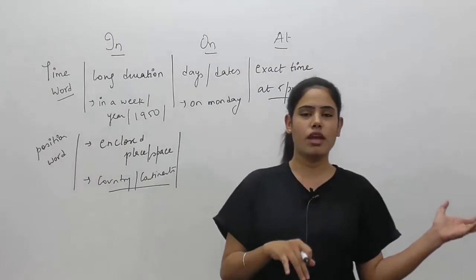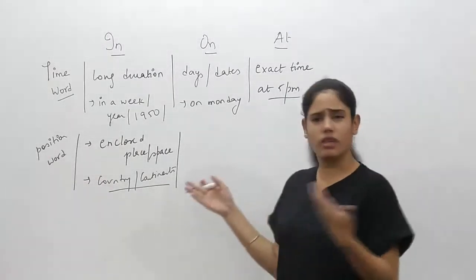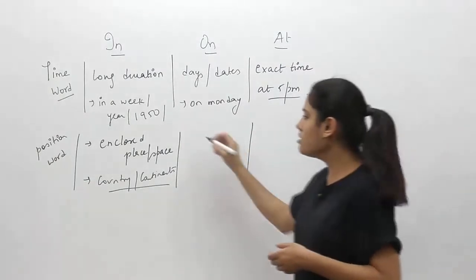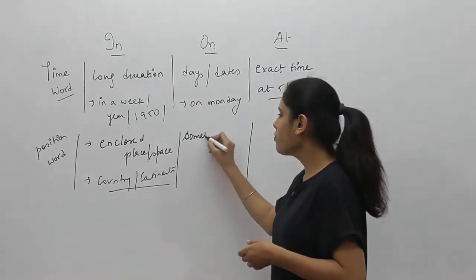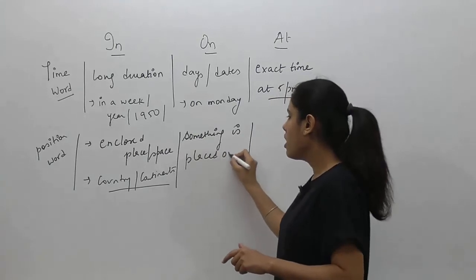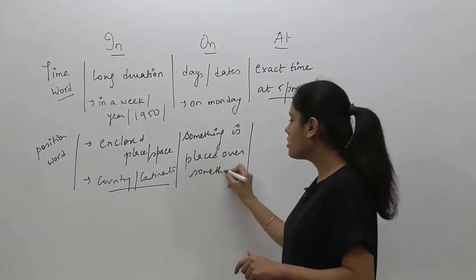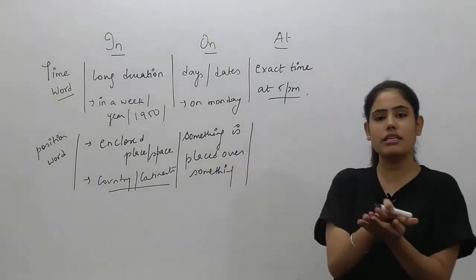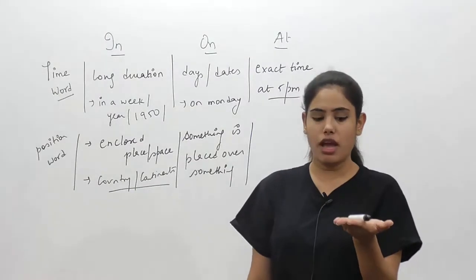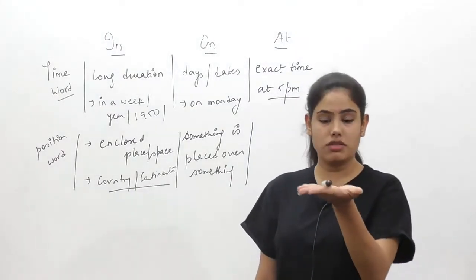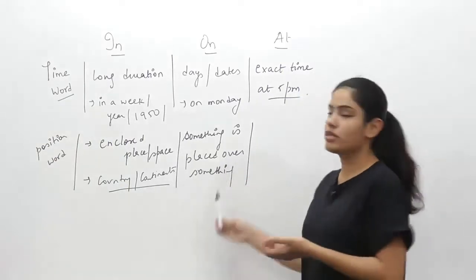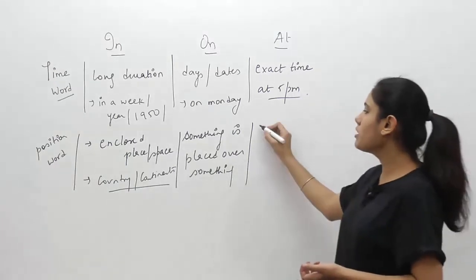In India, in Asia, in Europe, in Australia, in America — all of these use 'in'. 'On' is used when something is placed over something else — there is a point of contact. For example, the marker is kept on my palm. You use 'on' because something is placed over something, showing contact.